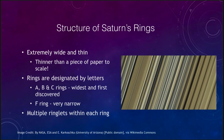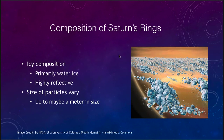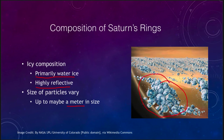Saturn's rings are primarily water ice, which makes them highly reflective — that's why we see them prominently from Earth. The size of the particles varies, maybe up to about a meter in size, and some of them will clump together. This is an artist's conception of what the rings might look like from inside the rings of Saturn — clumps of material that would likely stick together, though they're not strong enough to hold themselves together gravitationally.